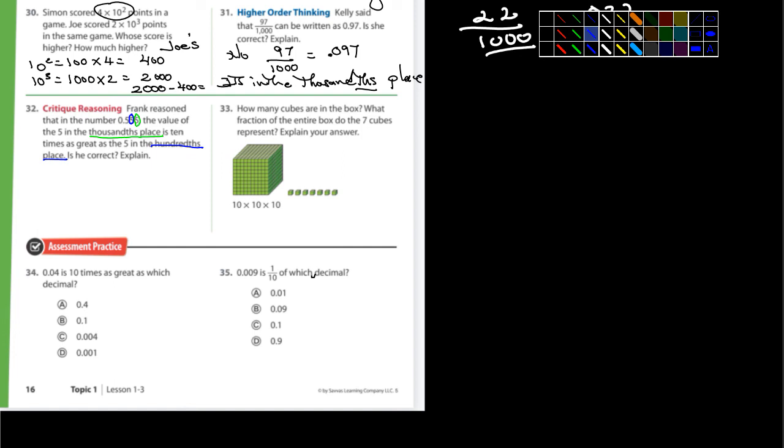The value of the 5 in the 1,000th place is 10 times as great as the 5 in the hundredth place. Is that correct? The answer is no, and it's because the green 5, the 5 in the 1,000th place is 10 times smaller. Not larger. 10 times smaller. Or 1 thousandth of the 100th place. There's that THS ending that tells us we're talking about decimals. Okay?